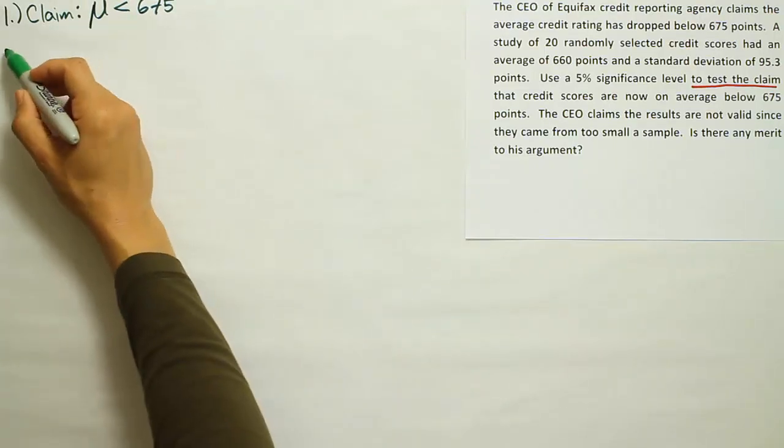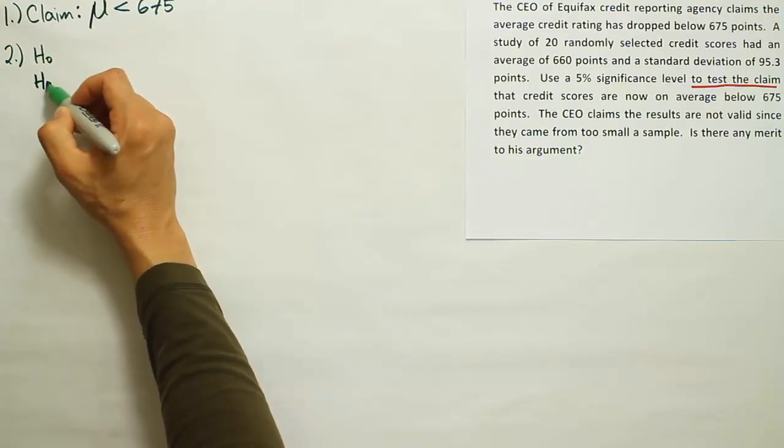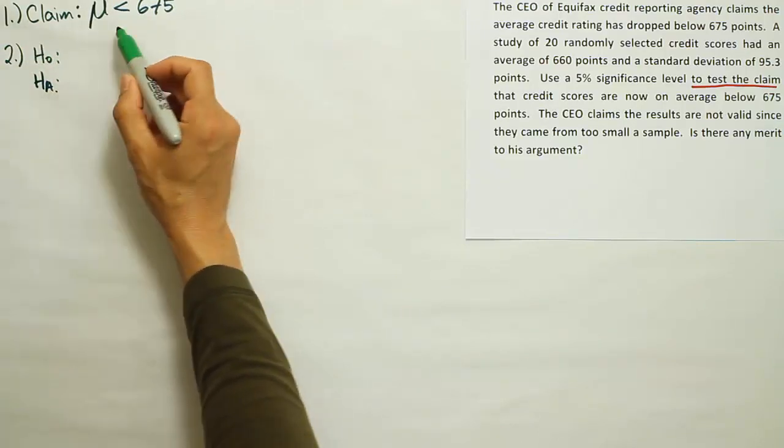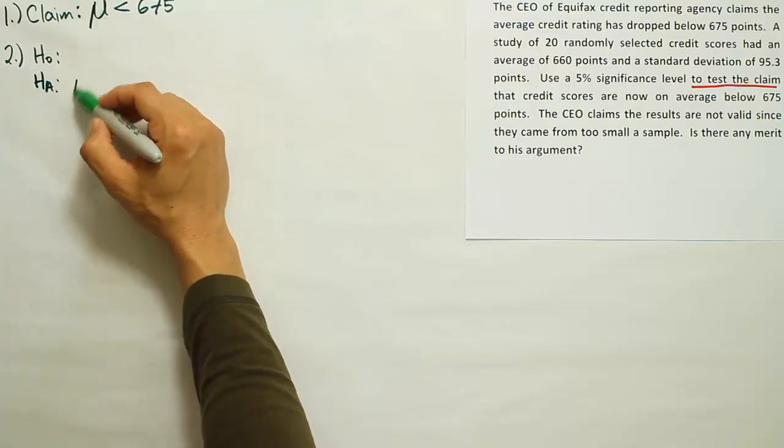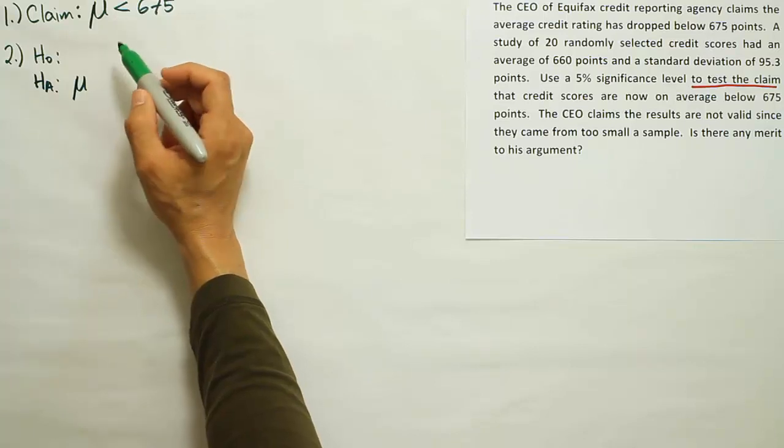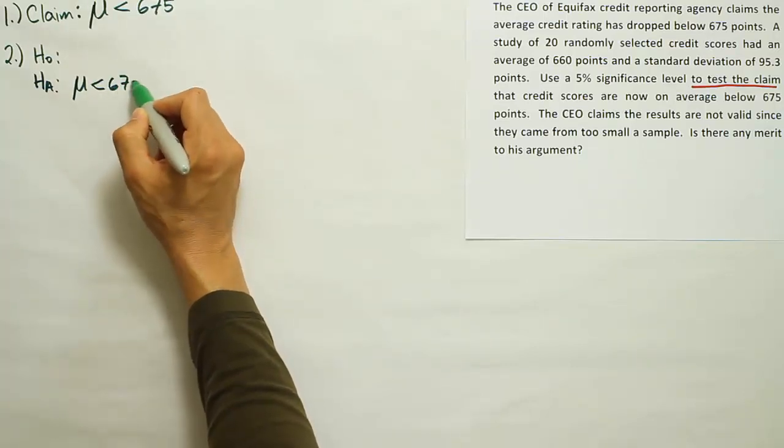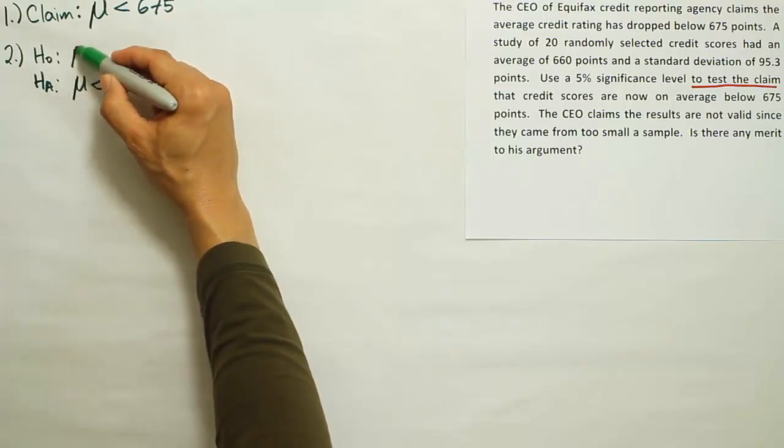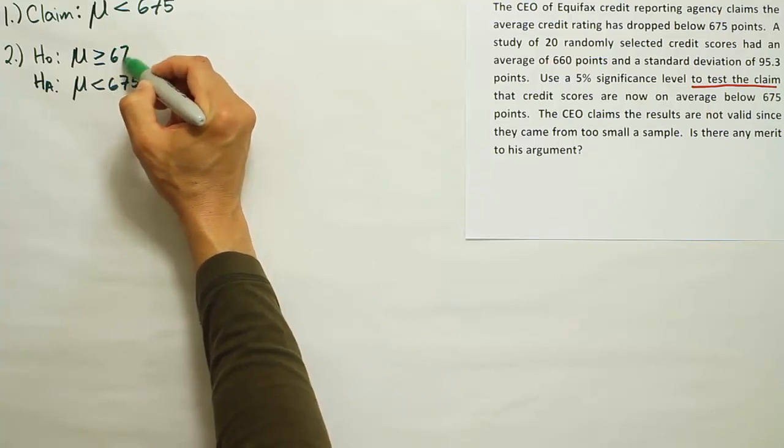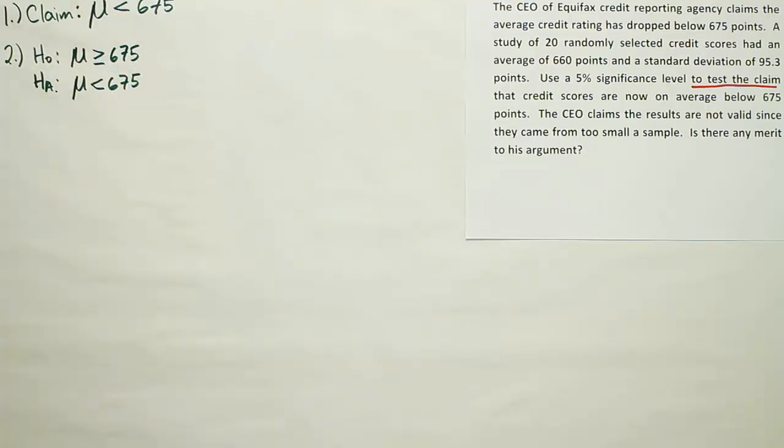Once we have the claim, we're going to identify H0 and HA. That's our competing pair of hypotheses. If the claim has a less than symbol, it's the same as HA. Remember, if it has any of the three symbols, less than, greater than, or not equal to, it is HA. The opposite of that is then going to be our H0. So the opposite of less than is greater than or equal to.